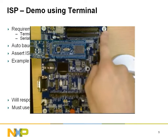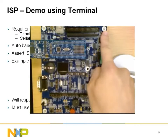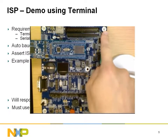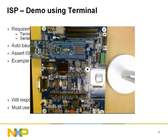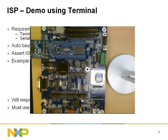To initiate ISP, I will depress the momentary push button with designator SW1 found in the upper right corner of the board. This button has a label RESET just above it. While asserting the RESET push button, I will also depress a push button in the lower left corner of the board with designator SW3. This button has an additional silkscreen label BL-EN, or bootloader enabled.